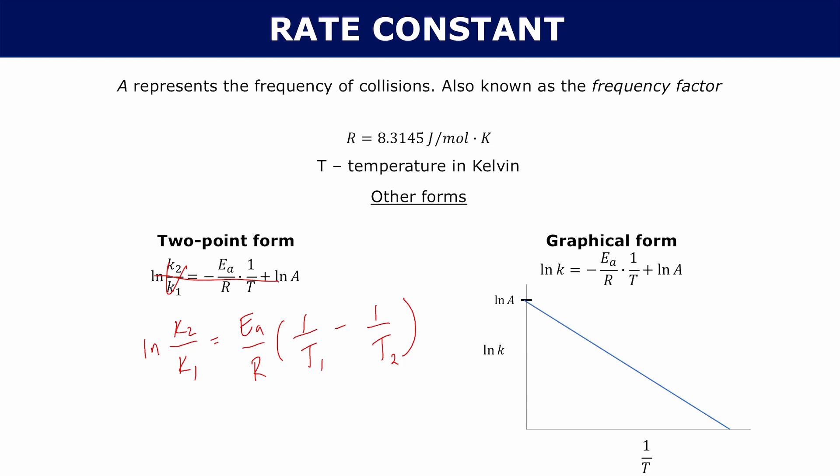If you notice, this equation is in the form of y equals mx plus b. Your slope is minus Ea over R, your x is 1 over T, your y is the natural log of k, and your b is the natural log of A. You can see all of that in this graph here — the slope is just negative Ea over R. We'll derive all of this later, but these are the two different forms of the Arrhenius equation.